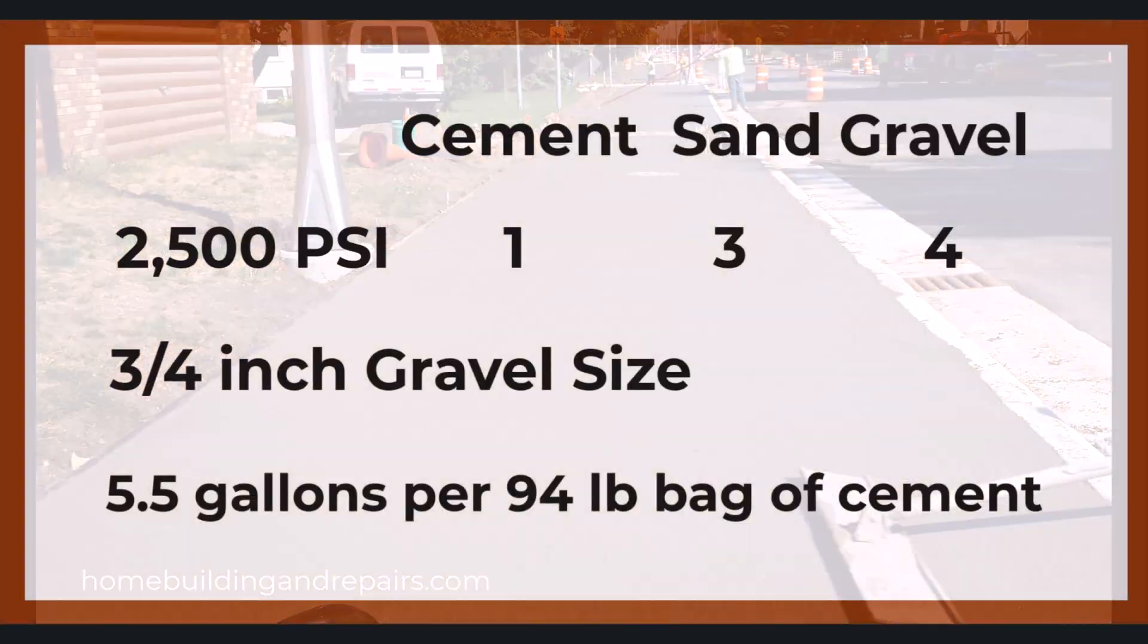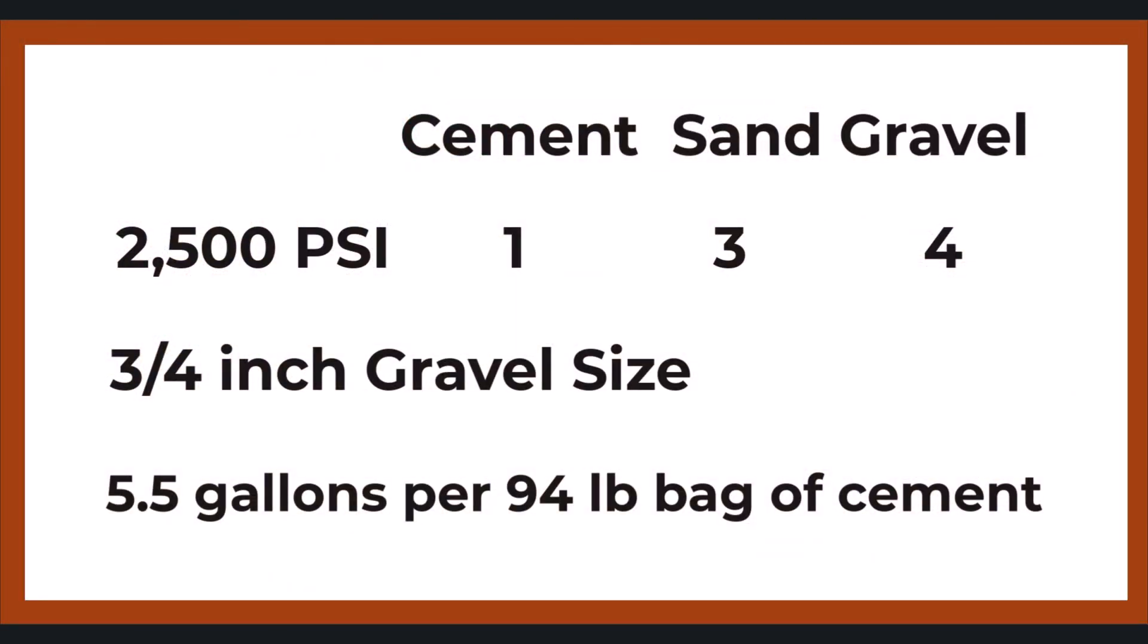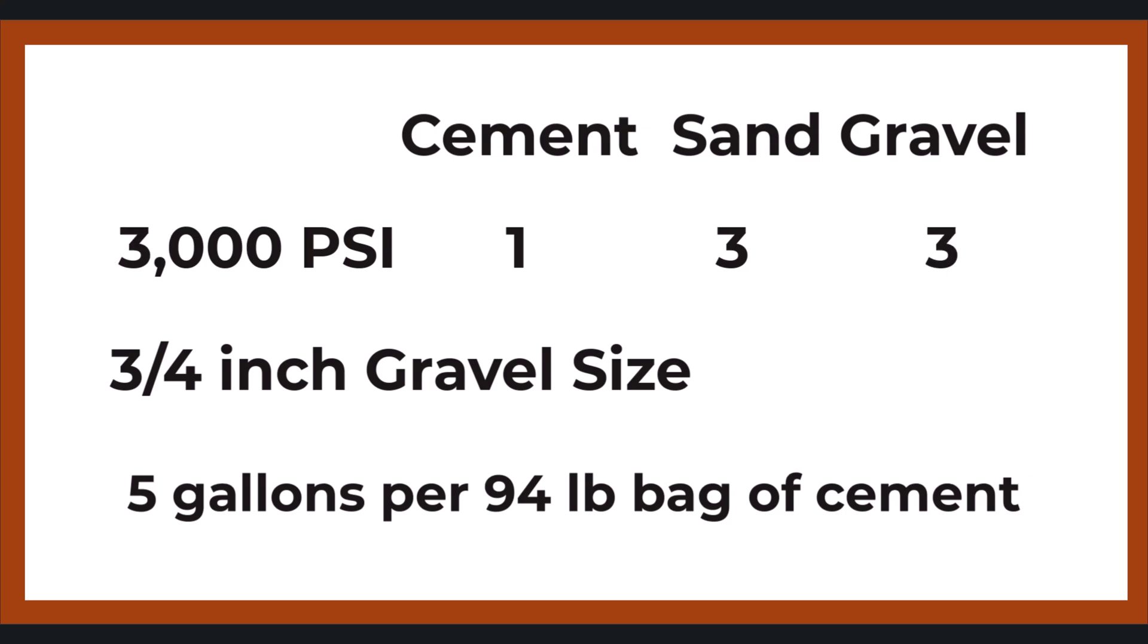Next up, let's take a look at a 2,500 PSI mix. That's going to be one part cement, three parts sand, four parts gravel. And you're going to use 5.5 gallons of water per 94 pound bag of cement. And as far as a 3,000 PSI mix goes, we're going to reduce the amount of gravel to three parts and reduce the amount of water to five gallons.